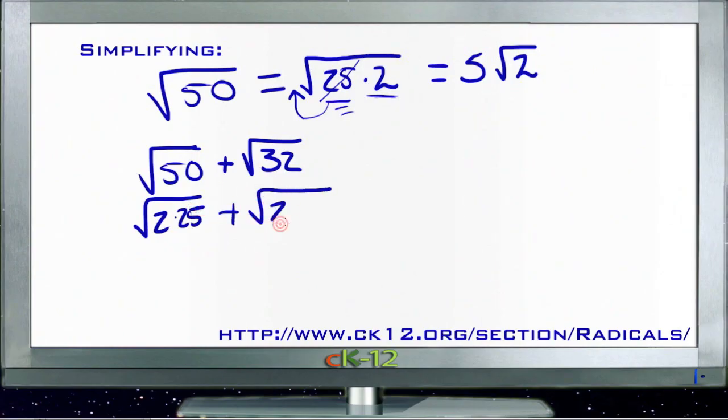But we can rewrite root 50 as the square root of 2 times 25 and square root of 32 as the root of 2 times 16. Then we pull the 25 out as a 5, giving us 5 roots of 2, and we pull the 16 out as a 4 because square root of 16 is 4, giving us 4 roots of 2.